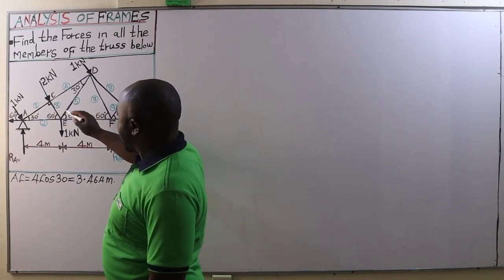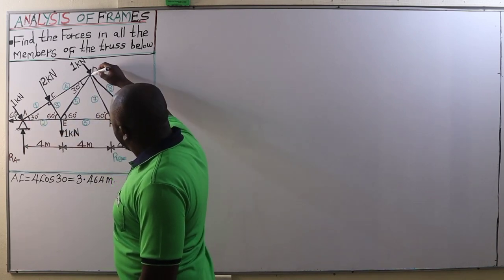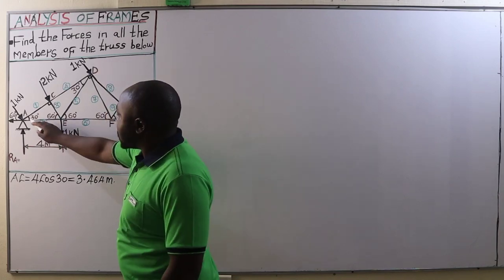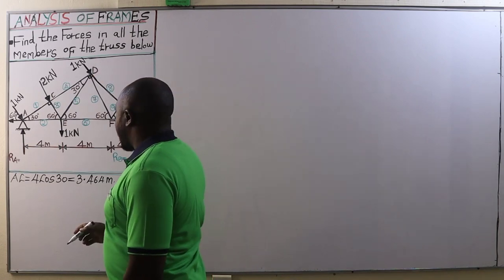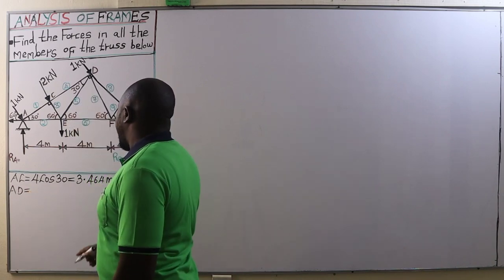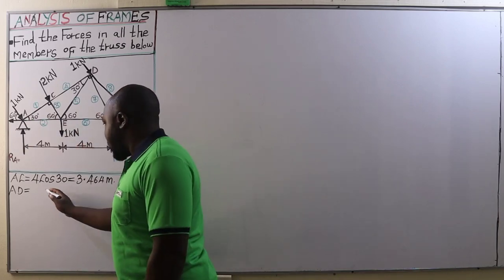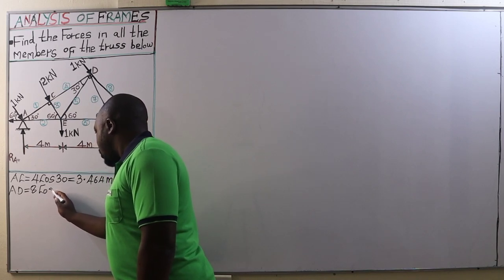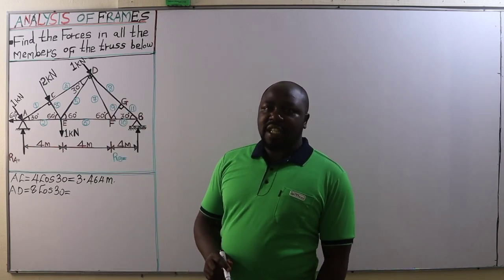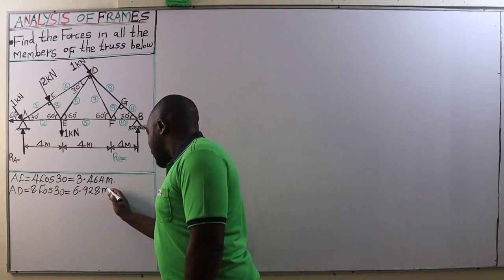We also need the length of AD. Considering triangle ADF, angle D is 90 degrees, this angle is 60 degrees. Therefore the length AD is given by the hypotenuse — the distance from F to A, which is 4 plus 4 equals 8 meters — multiplied by cos 30, giving 6.928 meters.